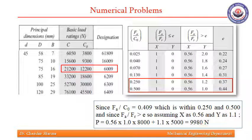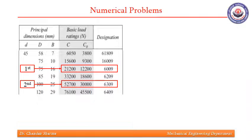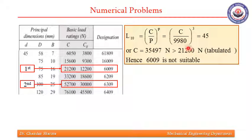This is how we found the equivalent dynamic load using the formula. We have found L10 in million revolutions and calculated P. Using the load-life relationship, we can find dynamic load carrying capacity C, which comes out to be 35497 newtons. This is C calculated, and for the first trial bearing 6009, C tabulated is 21200. Obviously, 35497 which is calculated is more than the value of C tabulated, so this bearing is not safe for our application. We move on to the next series of bearing.